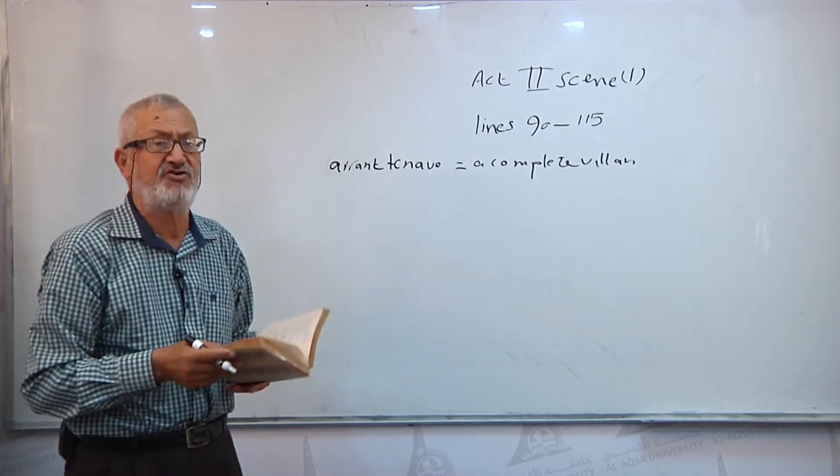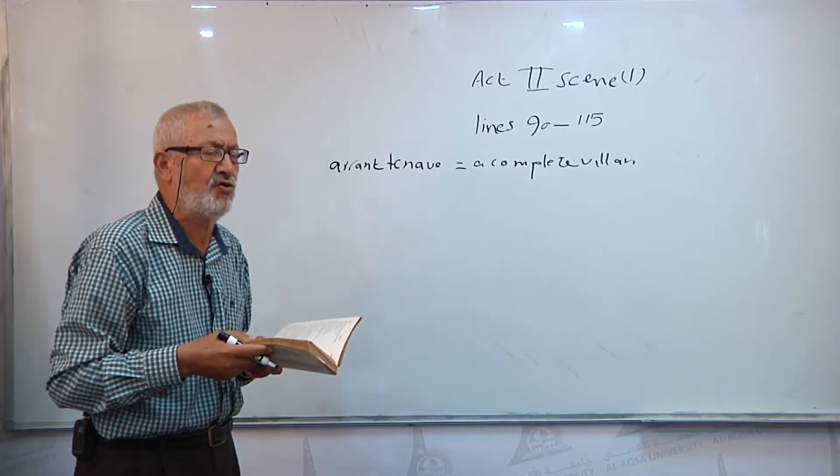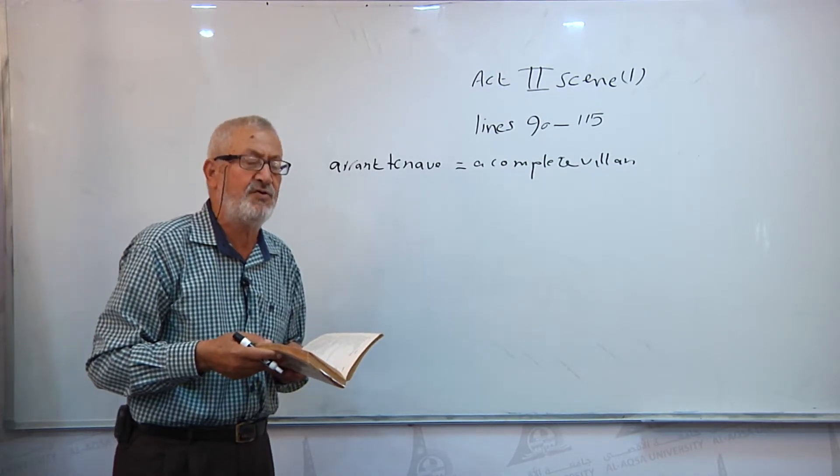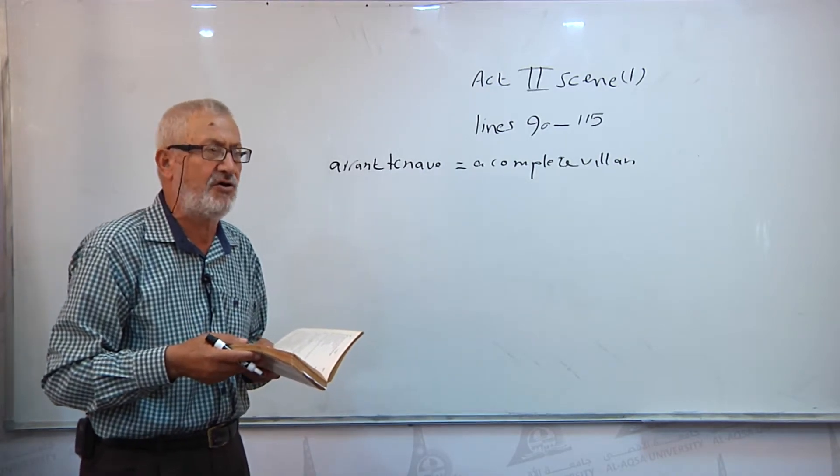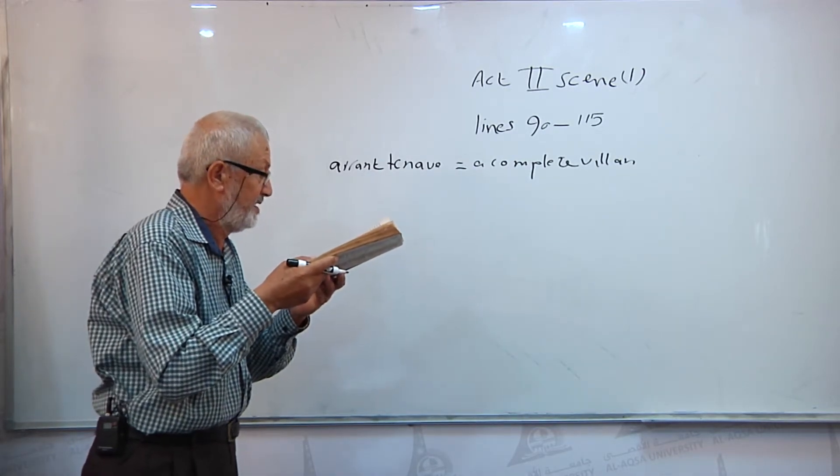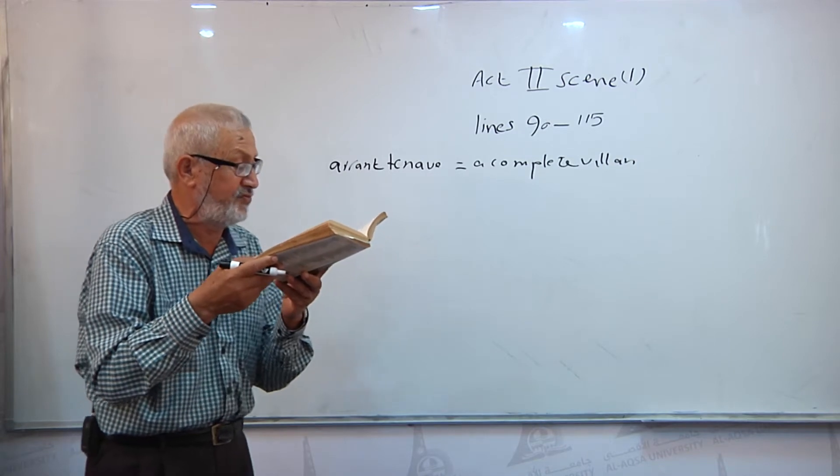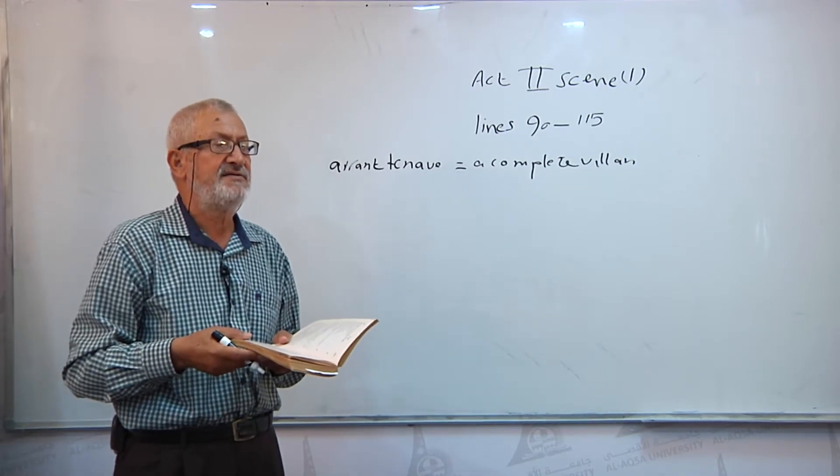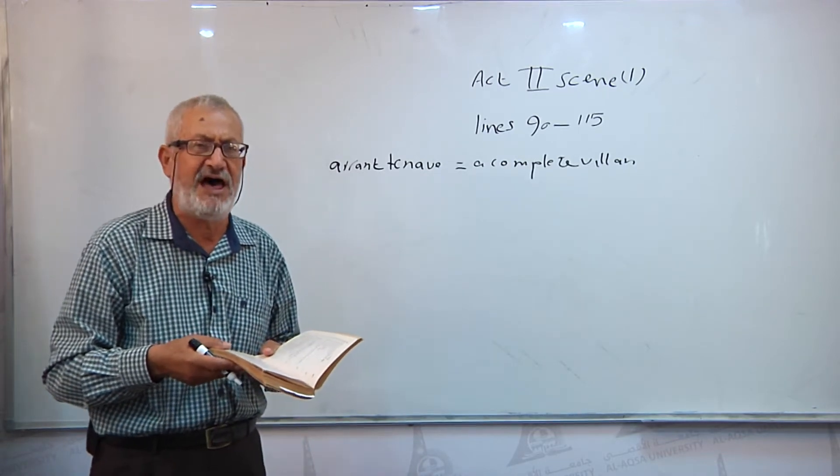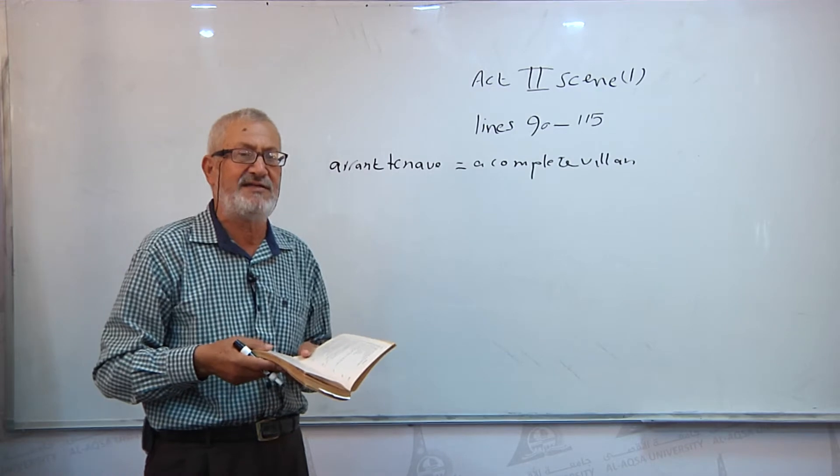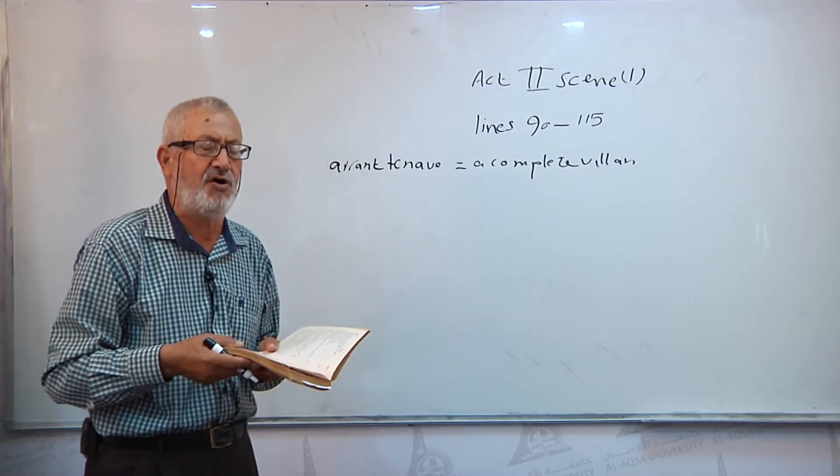This is Hamlet's understanding or conception of Claudius after he met the ghost of his father, who told him about the act of assassination committed by Claudius against Hamlet the king. Horatio, the scientific mentality, says that we don't need a ghost to come from the underworld to tell us that there is a villain. The man who is controlling the state, Denmark, named Claudius, is a villain.